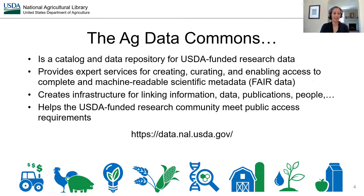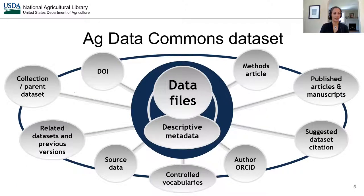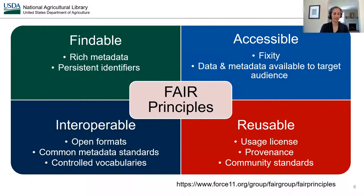The Ag Data Commons is a catalog and data repository for USDA funded research data. It provides expert services for creating, curating, and enabling access to complete and machine-readable scientific metadata. It creates infrastructure for linking information, data, publications, people, and more, and helps the USDA funded research community meet public access requirements. The Ag Data Commons strives to deliver FAIR metadata that are machine-readable and available via APIs and other automated means. As a generalist Ag repository, we focus most heavily on the Findability and Accessibility of the FAIR matrix, since Interoperability and Reusability generally require subject-specific adherence to more regimented data and metadata standards.